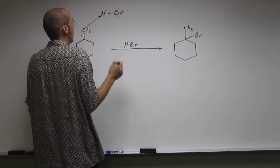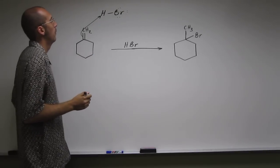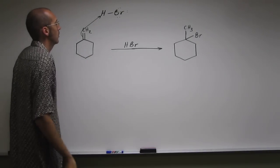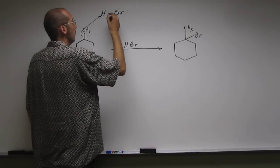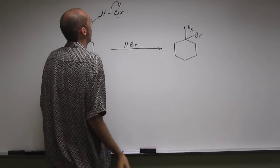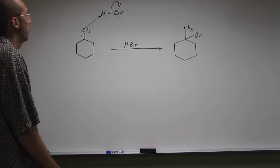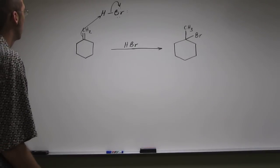So the double bond is going to grab that hydrogen, because remember that hydrogen is super acidic, it makes that double bond kind of basic. And that'll knock off that Br, like that.